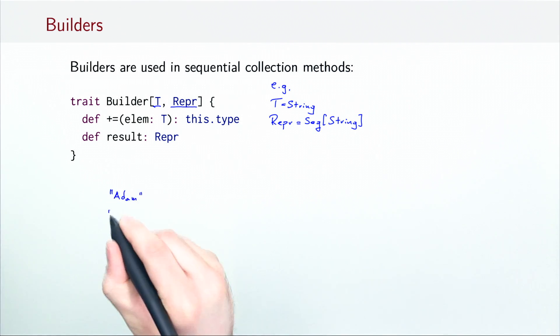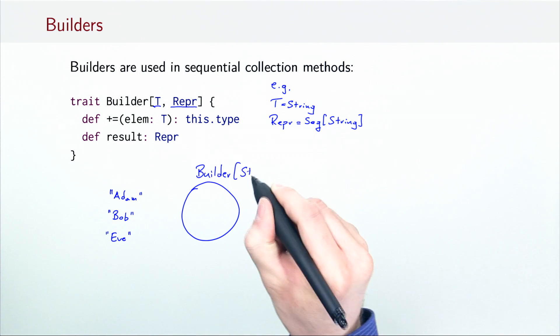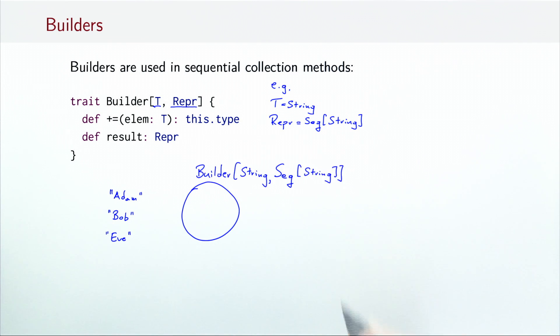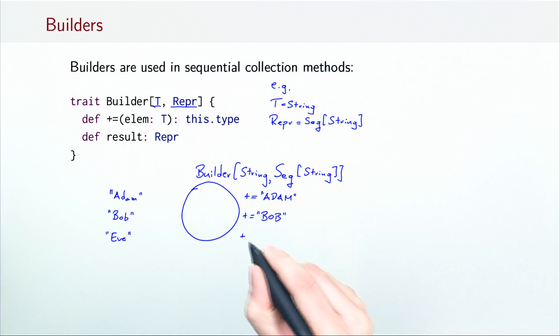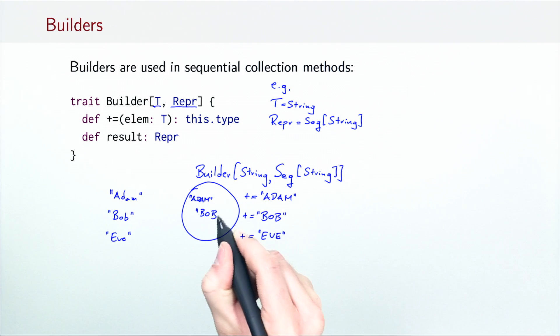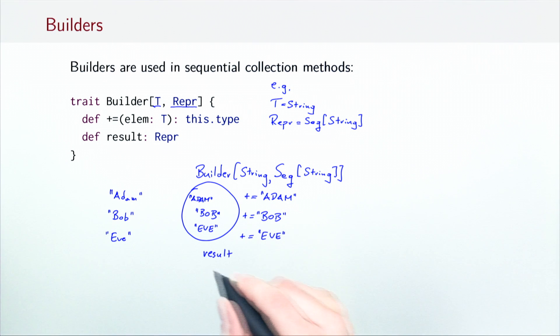For example, let's assume that a single processor has a sequence of strings Adam, Bob and Eve. To capitalize all the strings in this sequence, the processor needs to map each element. It starts by creating a new builder object, and then adding the capitalized versions of these strings into the builder by calling the plus equals method. At the end, the processor invokes the result method, which creates the resulting sequence.